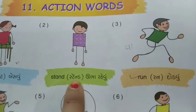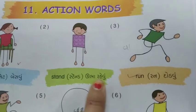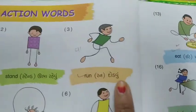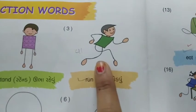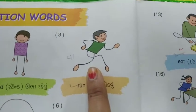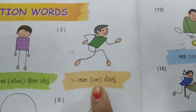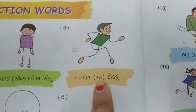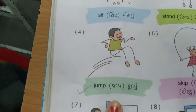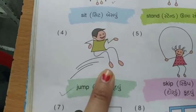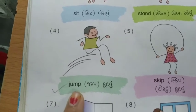STAND એટલે ઉભારે. હવે ત્રીજા ચિત્રમાં જો આ બોઈ છે, એ ક્રિયા કરે છે દોડવાની, ક્રિયા કરે છે કૂદવાની.